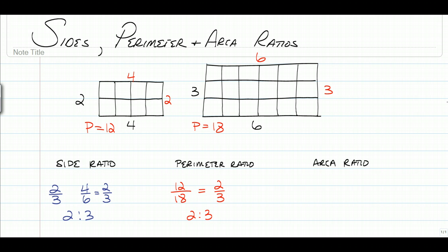So finally, let's take a look at the area. So the area, as we know, is base times height, or in this case, we can just count the 1 by 1 boxes and find out that the area of the smaller one is 8, and the area of the larger one is 18.